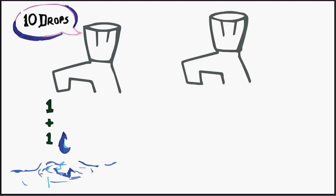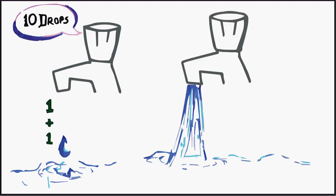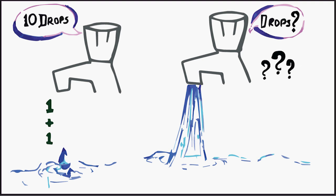But what if I ask you to tell me the amount of water that came from the second tap? Now you are in a fix. You could give me an answer in the first place because the water was in discrete bundles or drops. Fundamentally, you were able to add up the drops.